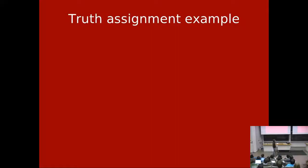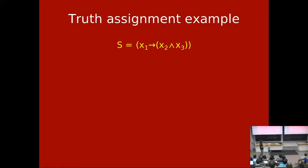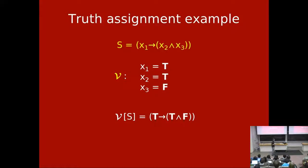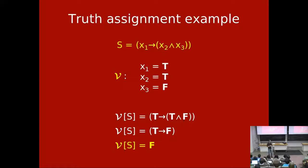Here's one more example. Take the sentence: x1 implies x2 and x3. The truth assignment sets x1 to true, x2 to true, and x3 to false. To get the truth value of the whole sentence you plug in and reduce: true implies true and false. Then true and false evaluates to false. And true implies false also evaluates to false. So the value of the whole sentence is false.